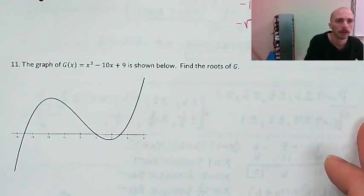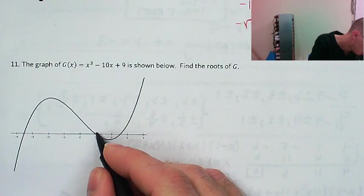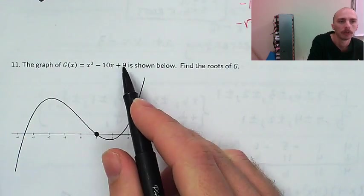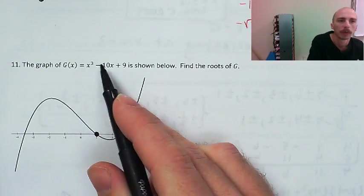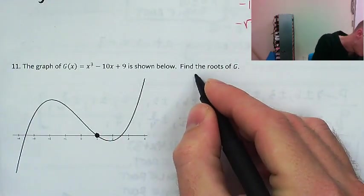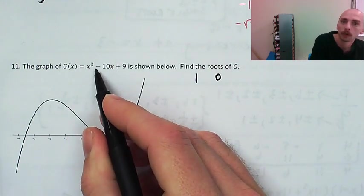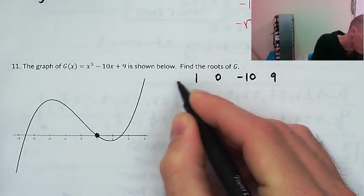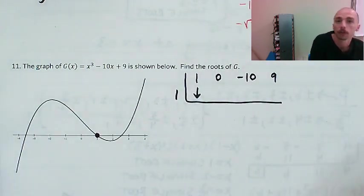We've got a picture of the graph of g of x and we want to find the roots. It looks like x equals 1 is going to be a root of this polynomial, and so we've got to find the other two. I'm going to set up for synthetic division: 1x cubed, 0x squared — we've got to put in that 0 to account for no x squared term — then negative 10x and positive 9. We're dividing by x minus 1 to find the other two roots.